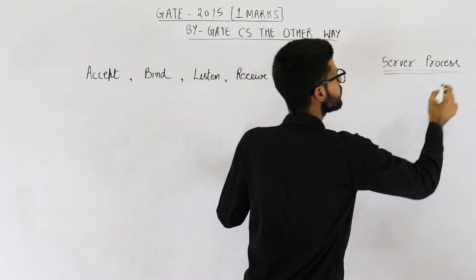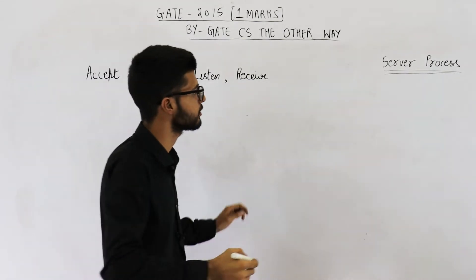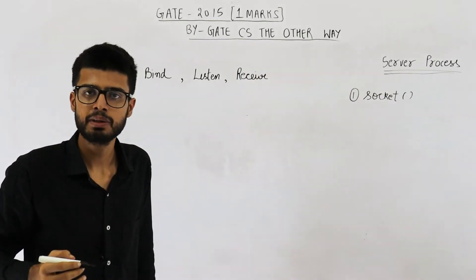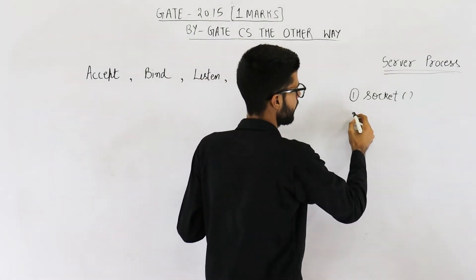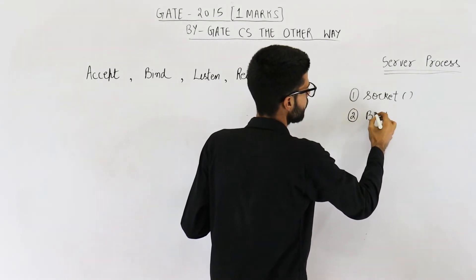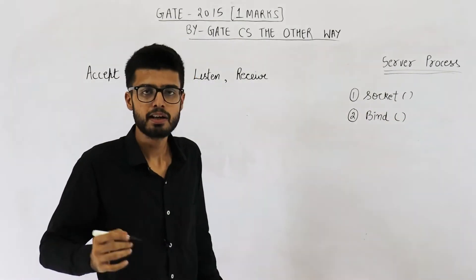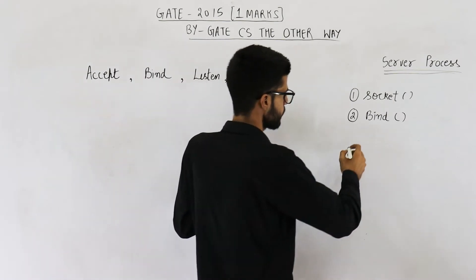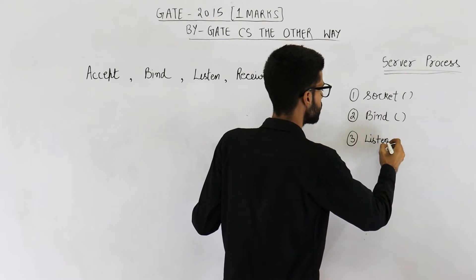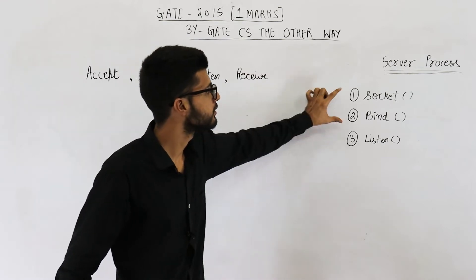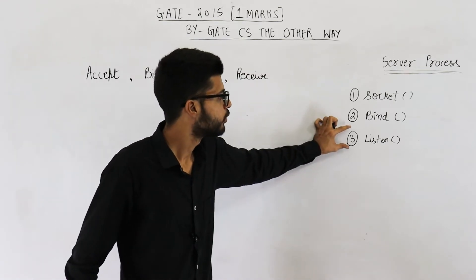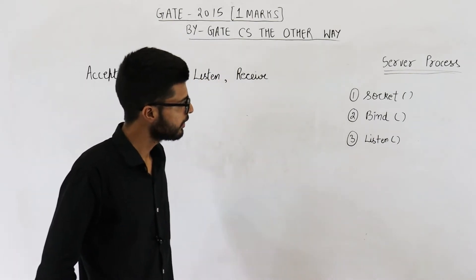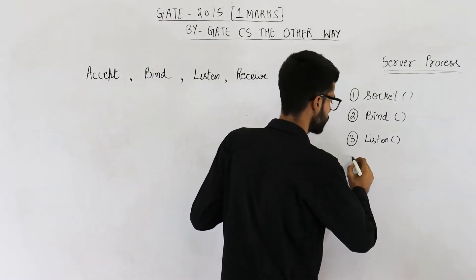So a server process will first of all create a socket. For creating a socket, we have the socket system call. So the first system call will be socket. After creating a socket, we need to give an IP address and a port number to that socket. We have already seen that a socket identifies the process uniquely using 48 bits. So to give an IP address and a port number, we execute the bind system call — we will bind this socket to some 48-bit number. After this, we will execute the listen system call, which will start listening on the socket. If someone wants to communicate, we will only know after the socket is activated; listen will activate or start that socket. After this, we will execute the accept system call, which will be the fourth one in this order.